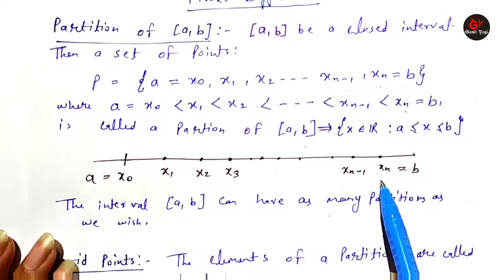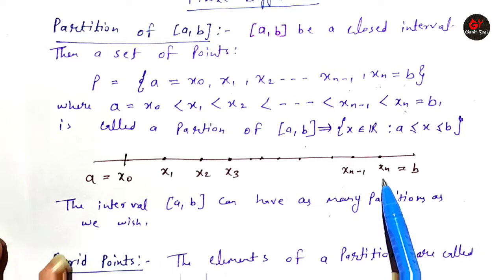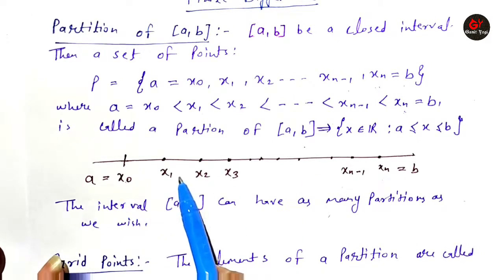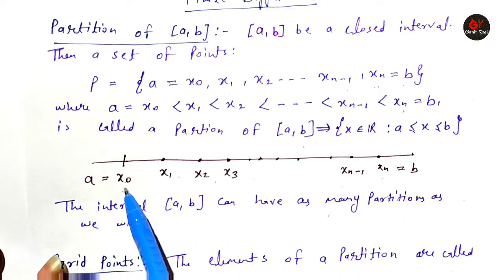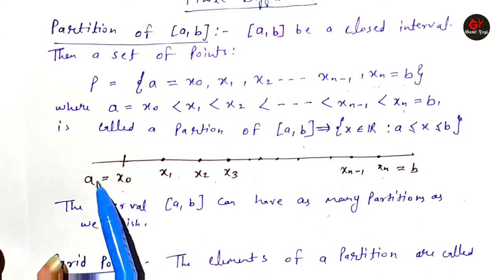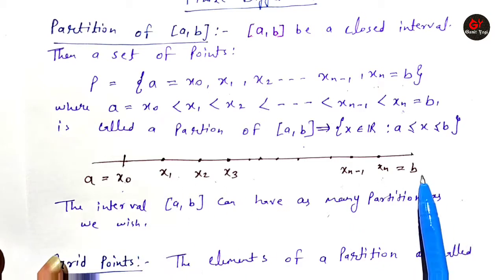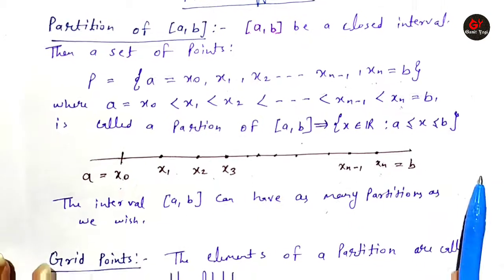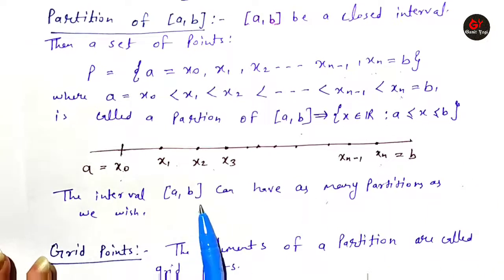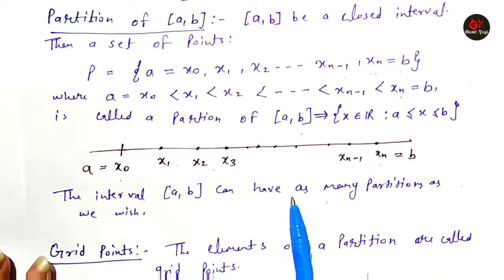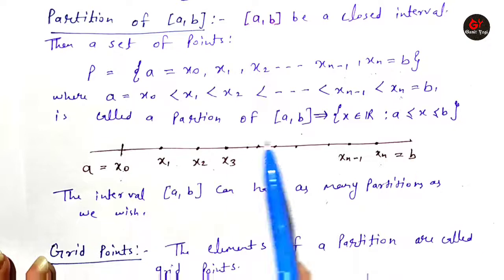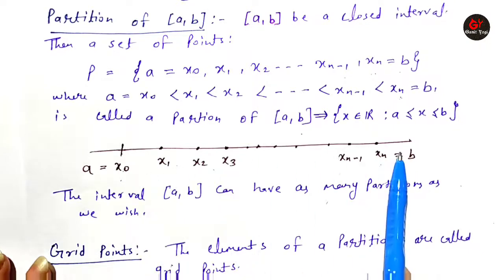I took a real number line and located on it all the partition points. So we have X0, X1, X2, X3, and so on up to Xn. X0 is close to A and Xn is close to B. I have located both these points on the number line. The closed interval A-B can have as many partitions as we wish — we can make as many partitions as we want between these two points, i.e., between X0 and Xn.